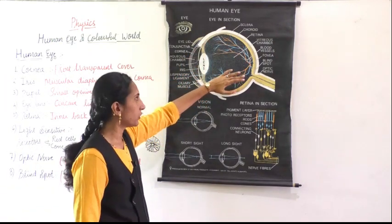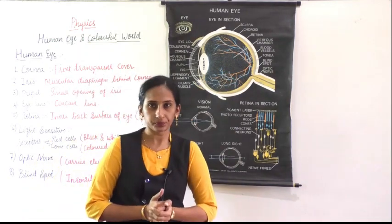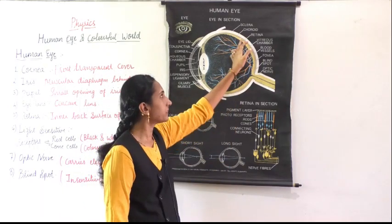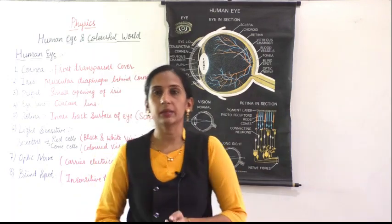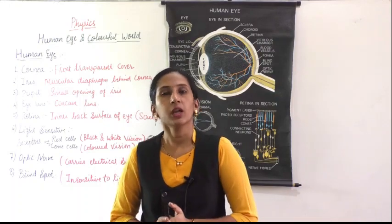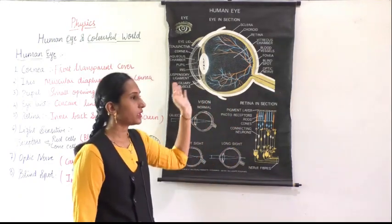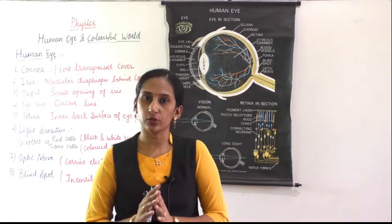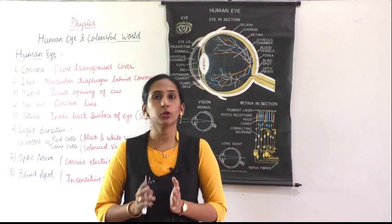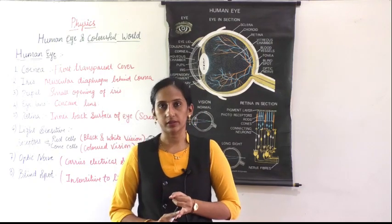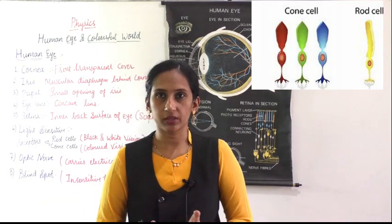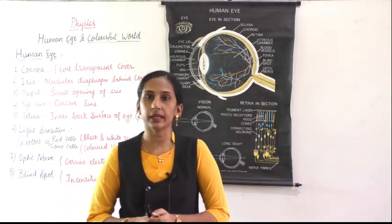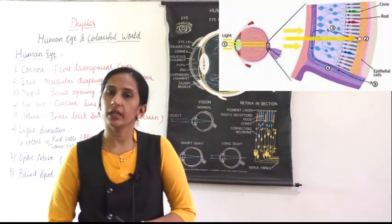The retina is the inner back surface of the eye. Most importantly, the retina contains receptor cells — two types: rod cells and cone cells. Cone cells are responsible for colored vision, and rod cells are responsible for black-and-white vision.